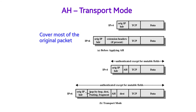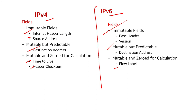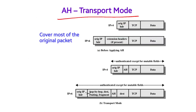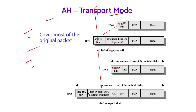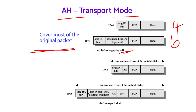The authentication header protocol operates in transport mode and tunnel mode, as introduced in the basic IPsec topic. In transport mode for IPv4, the original IP header is followed by the AH header, then TCP data — authenticated except for mutable fields. For IPv6, the original IP header and extension headers are similarly structured with the AH inserted. Transport mode covers most of the original packet.